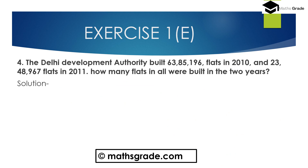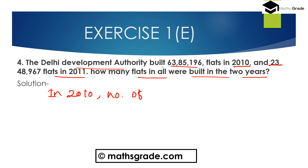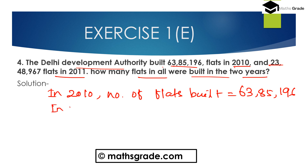Question number 4: The Daily Development Authority built 63,85,196 flats in 2010 and 23,48,967 flats in 2011. How many flats in all were built in 2 years? In 2010, the number of flats built is 63,85,196. In 2011, the number of flats built is 23,48,967.